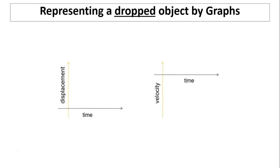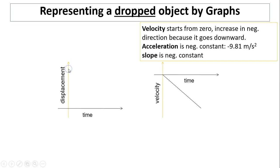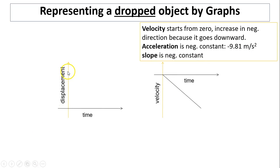Now let's take a look at graphs representing a dropped object. Whenever you see the word dropped, that means initial velocity equals zero. It starts from zero, then increases in the negative direction for velocity. The slope in a velocity versus time graph is acceleration, so this slope should be negative 9.81 meters per second squared — a constant negative slope.